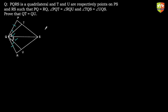We know that if we have to equate two different elements of two different triangles, the best approach is to prove that they are part of congruent triangles. Now, QT is part of triangles PQT or PQS, and likewise QU is part of triangle QRU and QUS. So either of those pairs has to be congruent.